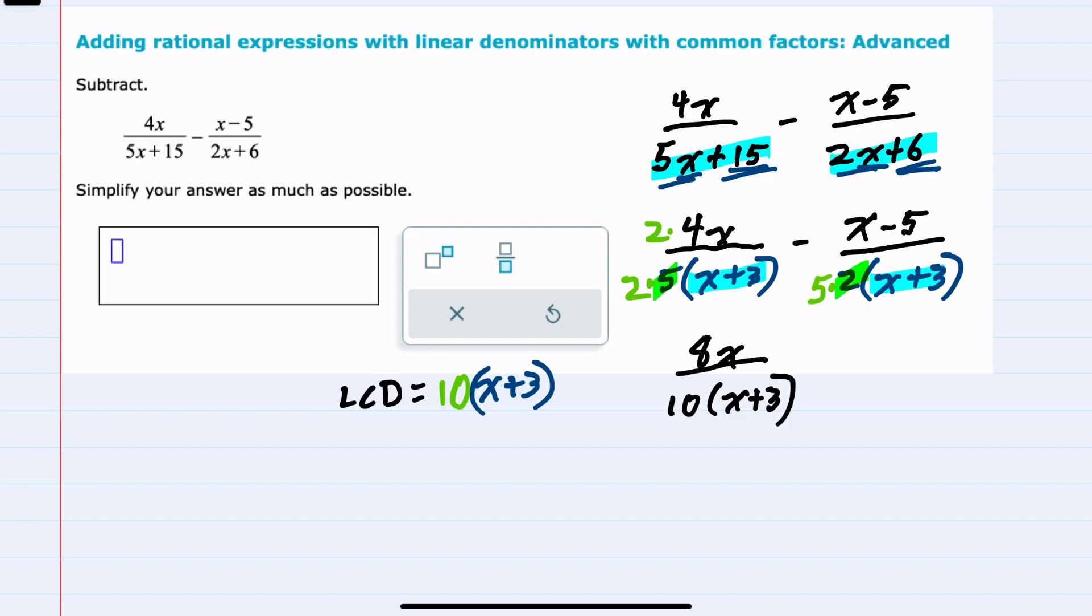For the denominator to be 10 times x plus 3, I would need to multiply by 5, and again I would multiply everything in the numerator by 5 as well. So this would be minus, I'll go ahead and distribute here, this numerator is 5x minus 25, and my denominator is now 5 times 2 is 10 times x plus 3.